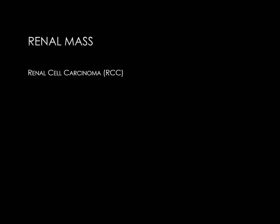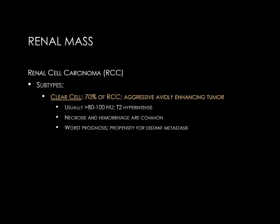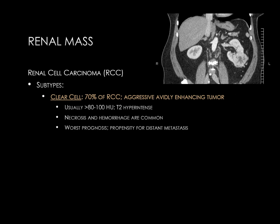Renal cell carcinoma has several subtypes. The most common subtype is clear cell carcinoma, comprising 70 percent of all RCCs. These are aggressive, avidly enhancing tumors that on CT usually enhance to more than 80 to 100 Hounsfield units. They are often T2 hyperintense on MRI, and necrosis and hemorrhage are common imaging features. These have the worst prognosis of any common subtypes and a propensity for distant metastasis. On the slide, an exophytic solid enhancing mass of the lower pole of the left kidney demonstrates avid enhancement similar to renal parenchyma — the kidneys receive 20 percent of cardiac output — consistent with clear cell carcinoma.